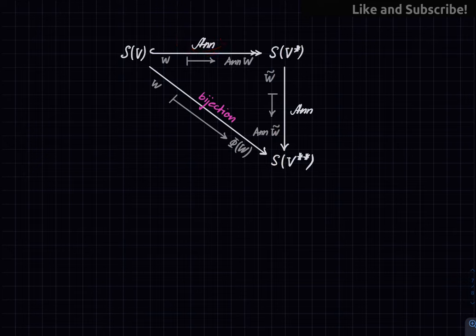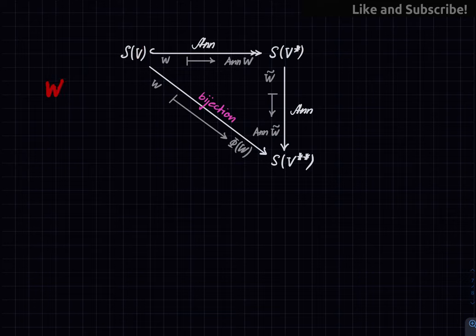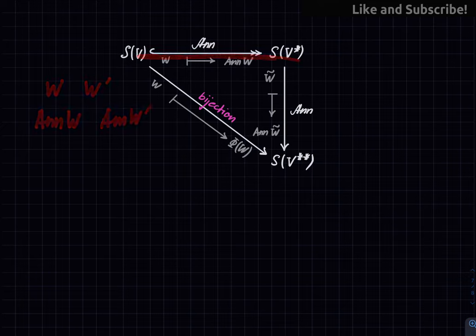The annihilator map is a bijection: it is surjective — every subspace of V* is the annihilator of some subspace of V — and injective — two different subspaces of V have different annihilators. That's all for this lecture. Like, comment, share, subscribe, and I will see you next time.